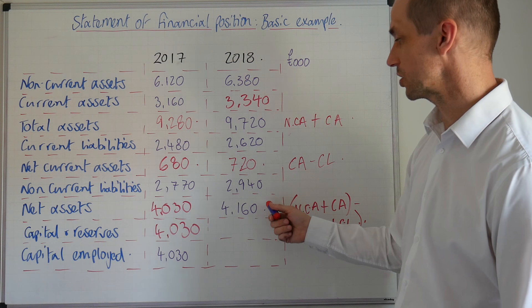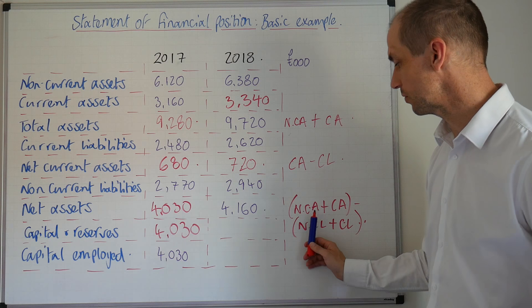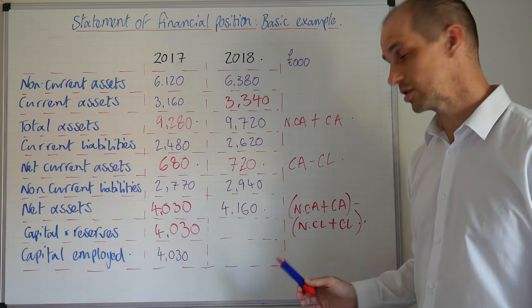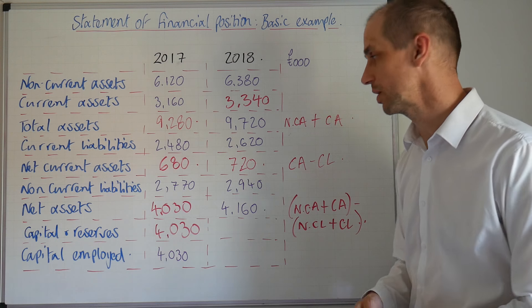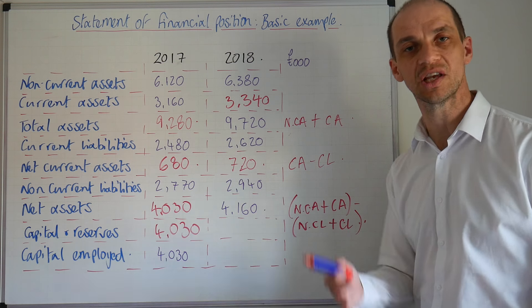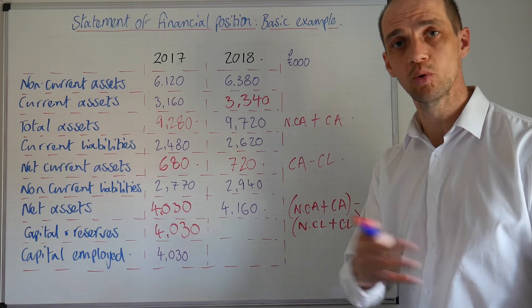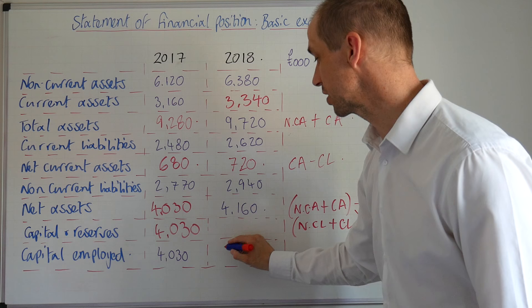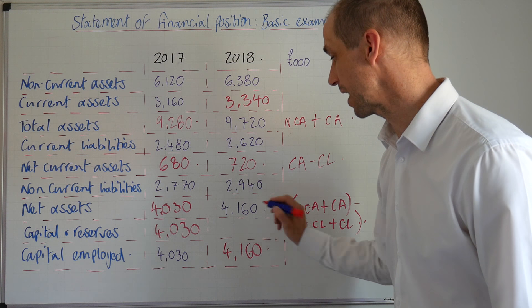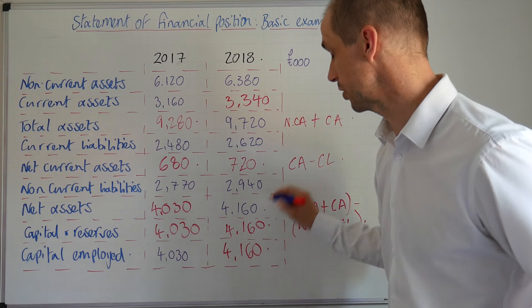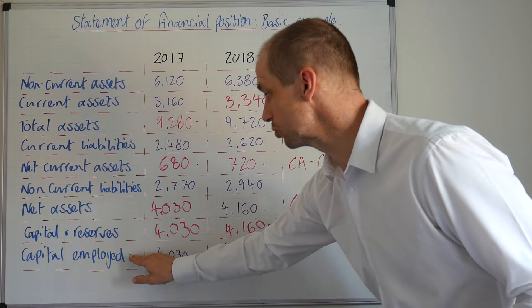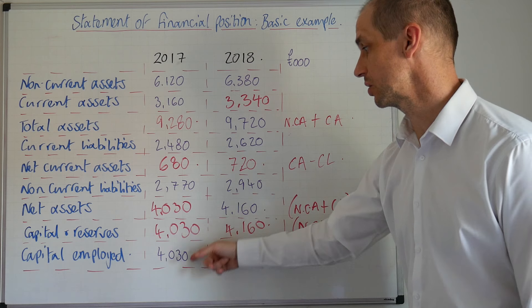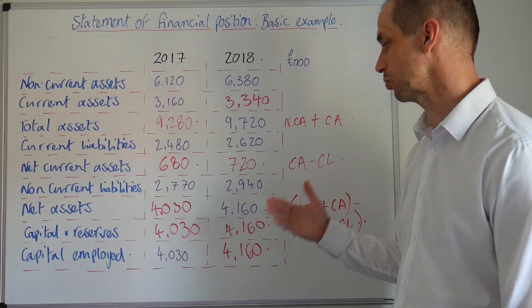The net assets figure is actually calculated for us. To remind ourselves: non-current assets plus current assets minus non-current liabilities plus current liabilities — all assets minus all liabilities, in essence. We can see that these amounts will balance for the business, giving us 4,160. The total capital employed in the business is 4,160 there.